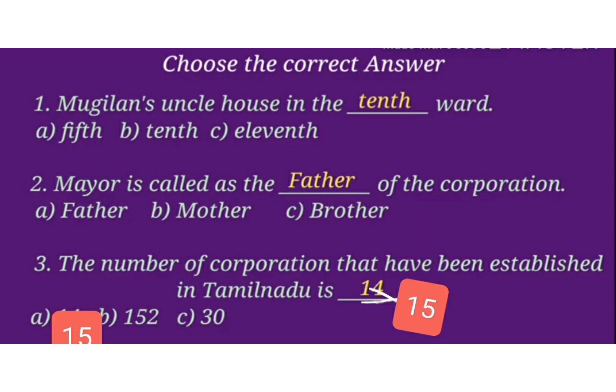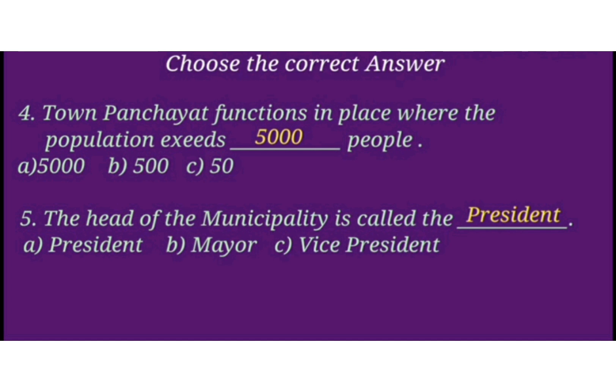The number of corporations that have been established in Tamil Nadu is 15. Town panchayat functions in a place where the population exceeds 5,000 people. The head of the municipality is called the president.